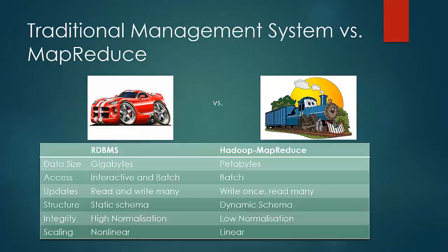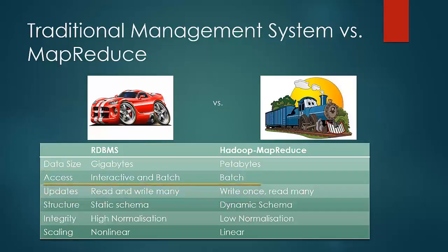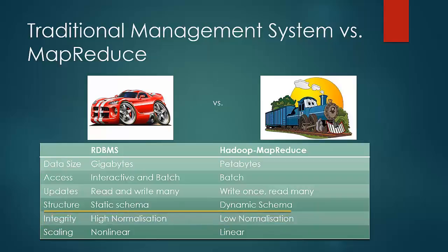Let's look at this table. RDBMS is a good option for data sizes in the range of gigabytes, while MapReduce starts to shine for data sizes in the range of petabytes and above. RDBMS offers both interactive and batch accessing options, while MapReduce is batch only. Data access patterns in RDBMS are read and write many times, while in the Hadoop file system we cannot edit a file directly. In RDBMS, the schema must be present at the time of loading the data. While in Hadoop, schema binding is delayed until the time of processing.